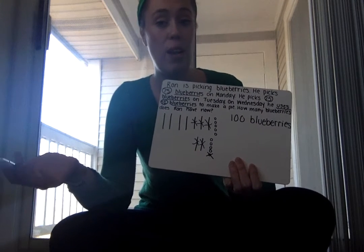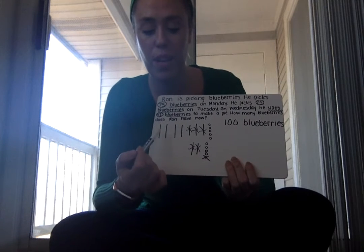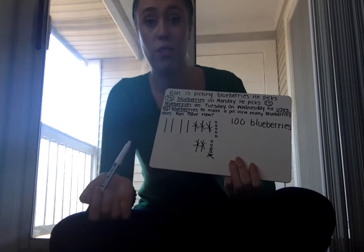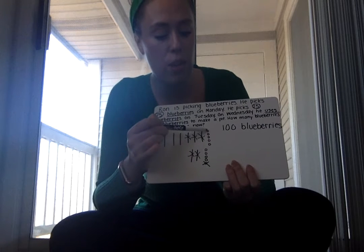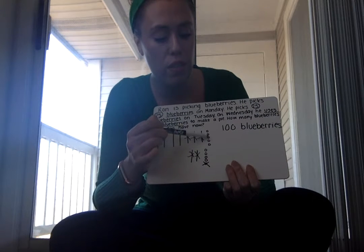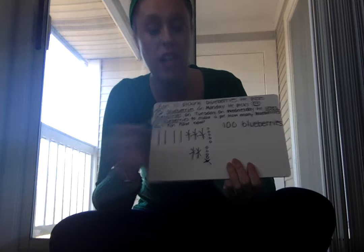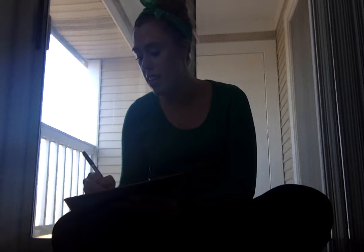Now I count up what's left to find my total. Counting the tens: 10, 20, 30, 40. Those are the only tens I have left. Now my ones: 41, 42, 43, 44, 45, 46, 47, 48, 49 blueberries. So our answer is 49 blueberries.